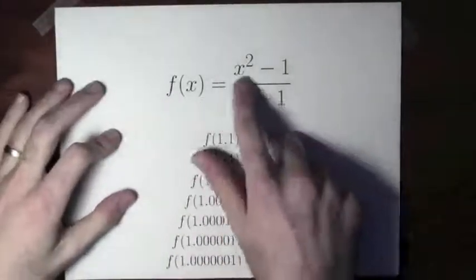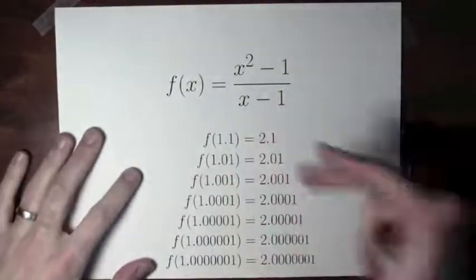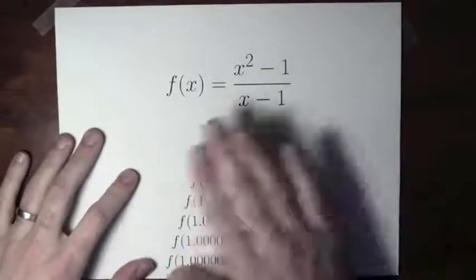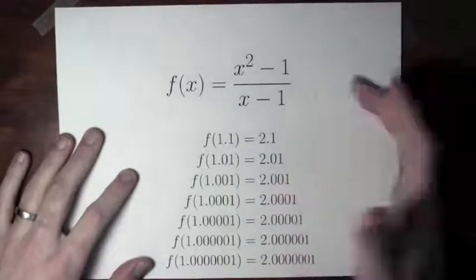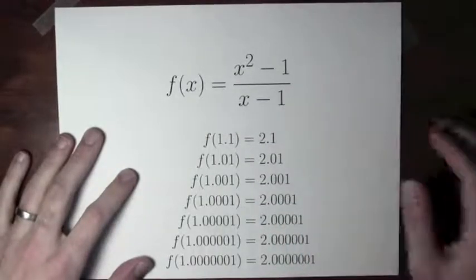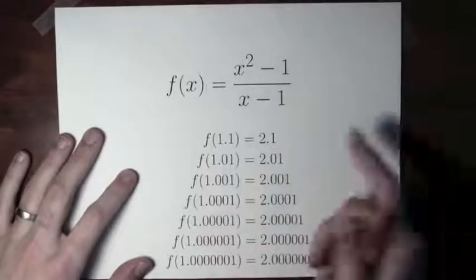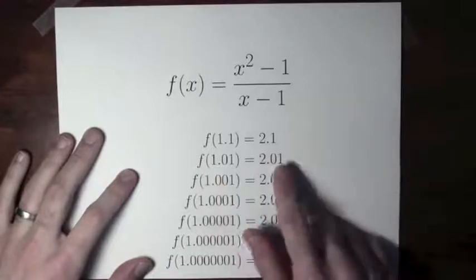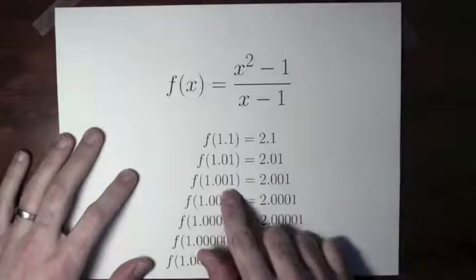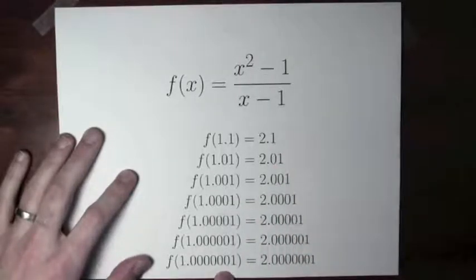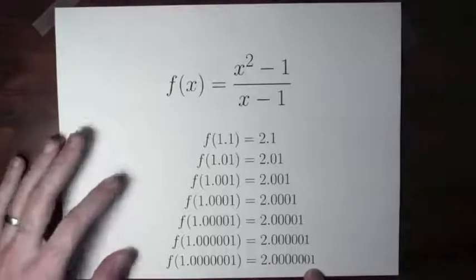Instead of just plugging in one value, let's plug in a whole bunch of values and make a table. f of x is x squared minus 1 over x minus 1. I can't plug in 1 because I'd be dividing by 0 — 1 isn't in the domain of this function. But I can plug in numbers near 1: at 1.1 I get 2.1, at 1.01 I get 2.01, at 1.001 I get 2.001, and so on. If I plug in 1.00001, I get out 2.00001.